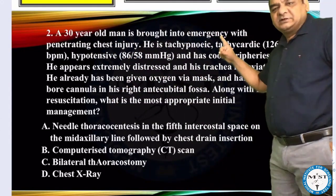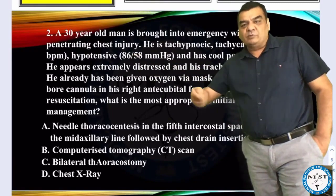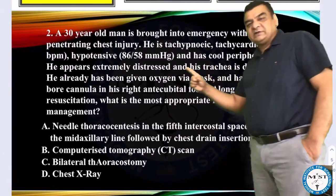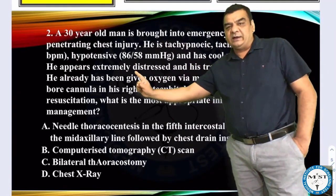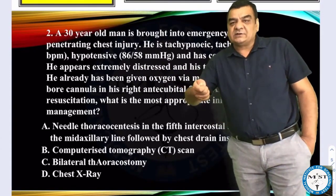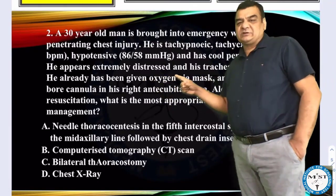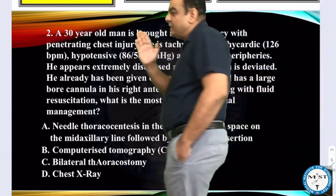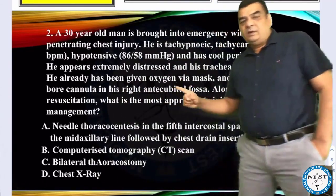The patient is a 30-year-old presenting as an emergency — so this is some acute condition. Penetrating chest trauma, tachycardic at 126 beats per minute, hypotensive, with full peripheries. This is the story of hypovolemia: tachycardia, tachypnea, hypotension. He is losing blood due to penetrating chest trauma, meaning injury to some vessel. He appears extremely distressed, and his trachea is deviated — indicating tension pneumothorax.